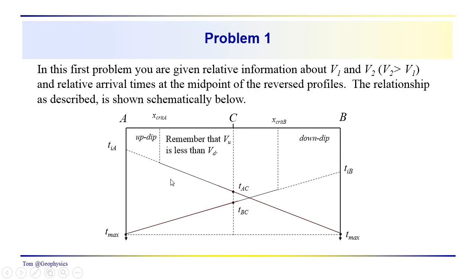Slopes are proportional to the inverse of the velocity, so the apparent velocity is smaller from the up dip direction and larger from the down dip direction. You want to remember that VU is less than VD. The critical distance from the up dip location will be less than from a source down dip. The thickness of the layer down dip is greater, so it takes greater distance for the first critical refraction to be recorded at the surface.